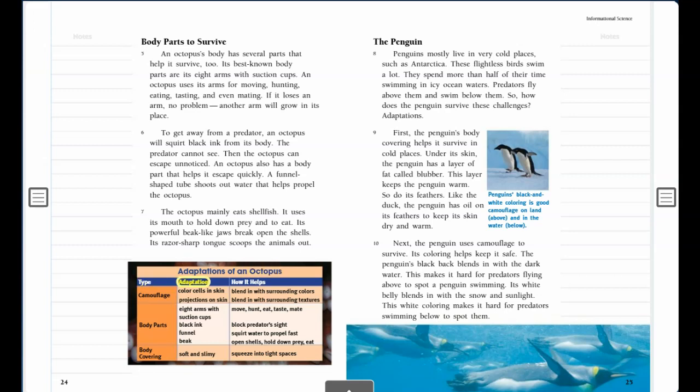Adaptations of an octopus. Type: Adaptation and how it helps. Camouflage: color cells in skin, projections on skin. Blend in with surrounding colors. Blend in with surrounding textures.